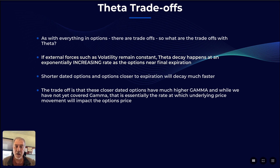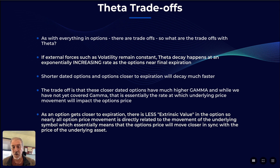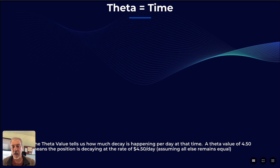As Gamma gets higher, an equal movement in the underlying is going to impact your option's price more. As an option gets closer to expiration, there is less extrinsic value in it, so nearly all of the option's price movement becomes more directly correlated to the movement of the underlying symbol. This essentially means the option's price moves more in sync with the underlying asset as it decays closer to expiration. Theta essentially equals time.